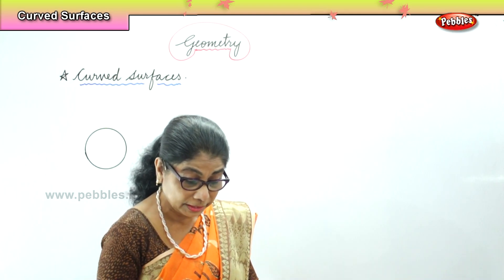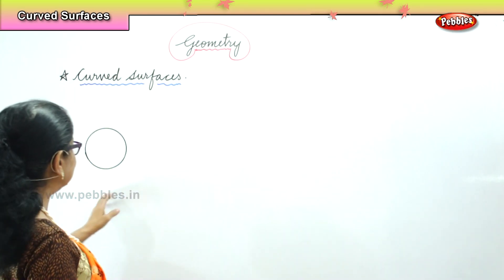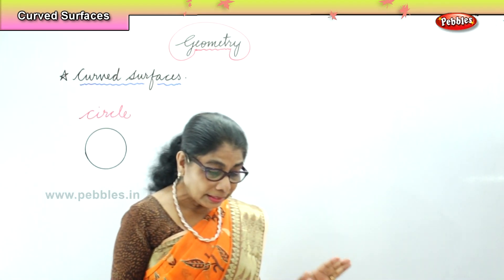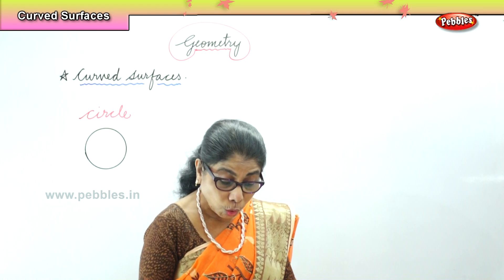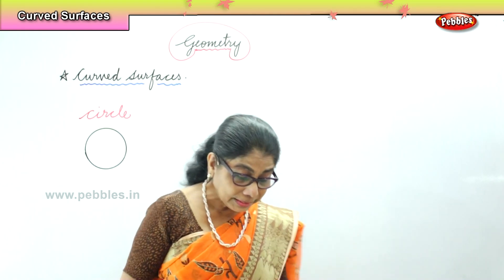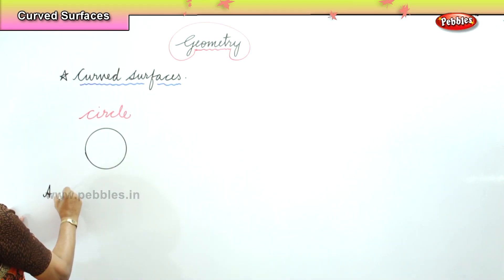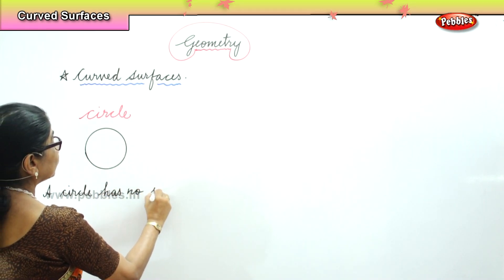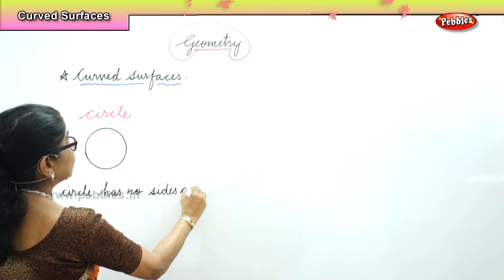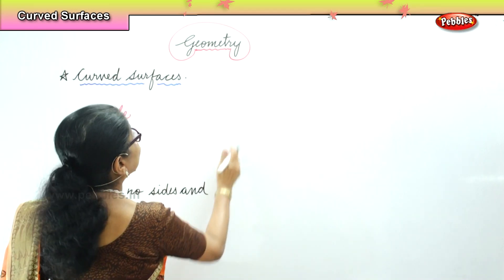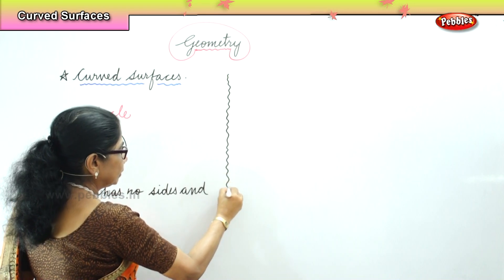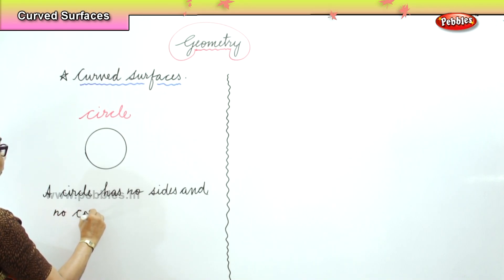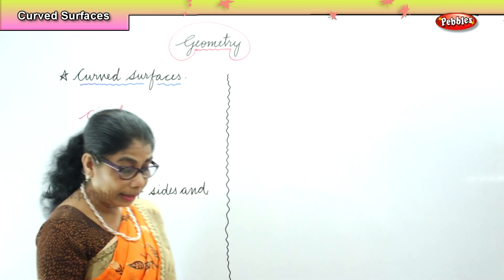When we talk about curved surfaces, we are talking about this — a circle. This is a circle. And what about the circle? A circle has no sides and no corners. That's what we have to remember regarding circles.